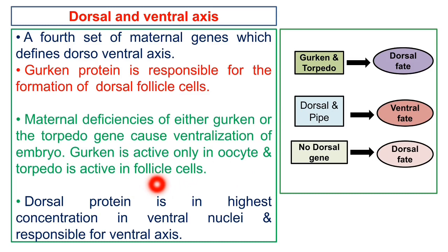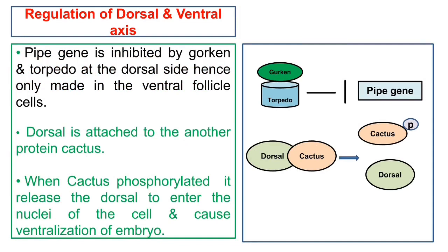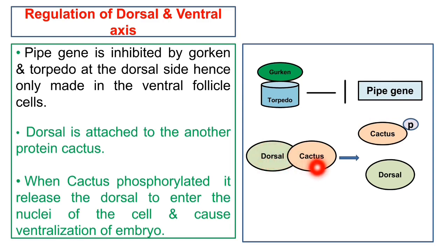Deficiencies of dorsal genes also result in development of dorsal fate. In the regulation of the dorsal-ventral axis, gurken and torpedo inhibit the pipe gene at the dorsal site; hence pipe is made only in ventral follicle cells. The dorsal protein is present with another protein, cactus. When cactus is phosphorylated, it releases the dorsal protein to enter the nucleus and cause ventralization of the embryo.